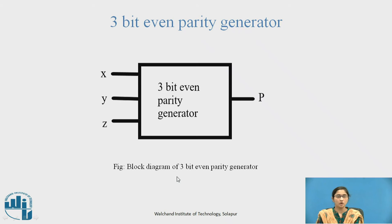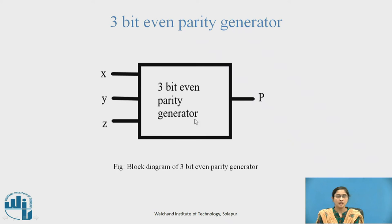This is the block diagram of the 3-bit Even Parity Generator. The name 3-bit is given because three inputs — X, Y, and Z — are given to this block, and the even parity bit P is generated at the output. Here, X is the MSB and Z is the LSB.